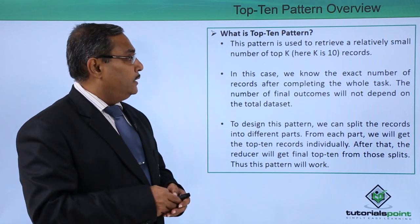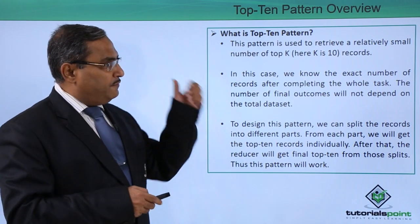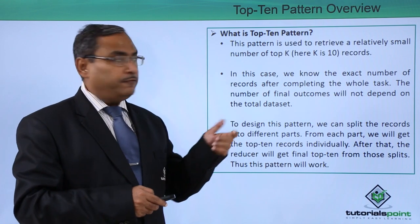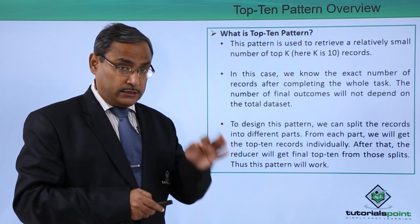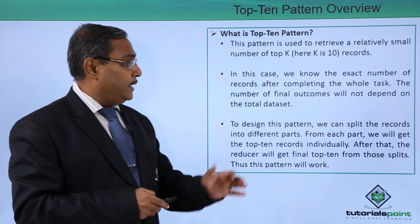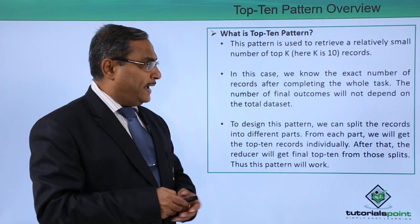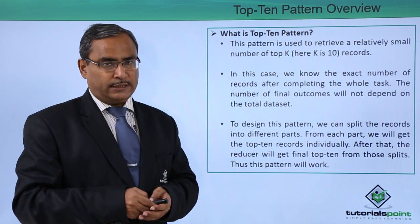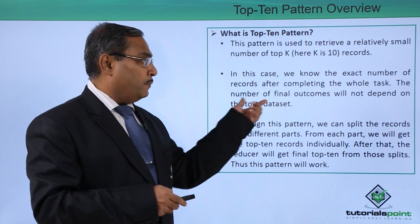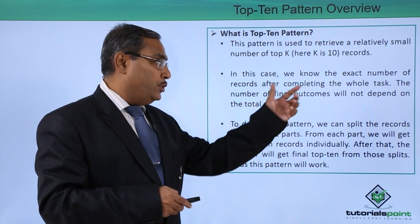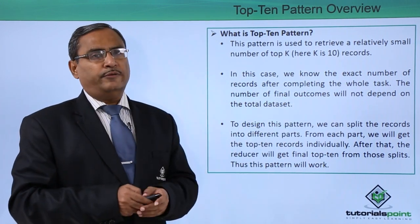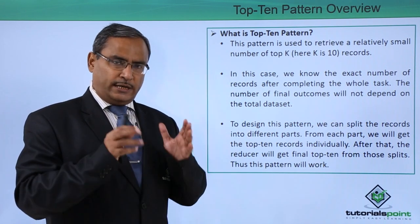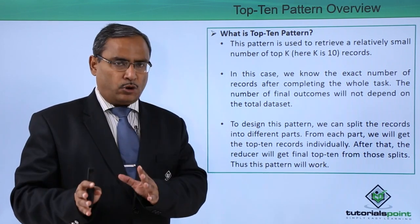What is the top 10 pattern? This pattern is used to retrieve a relatively small number — k number of records. Here the value of k is equal to 10. In this case, we know the exact number of records after completing the whole task, but the number of records in the final outcome will not depend on the total records in the input data set. Here we are going to select only the k number of records.